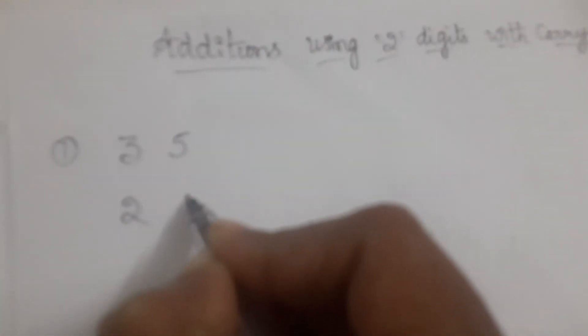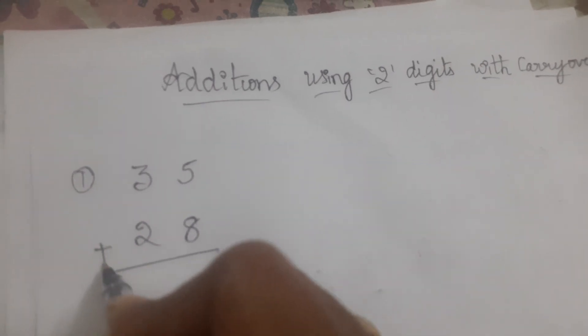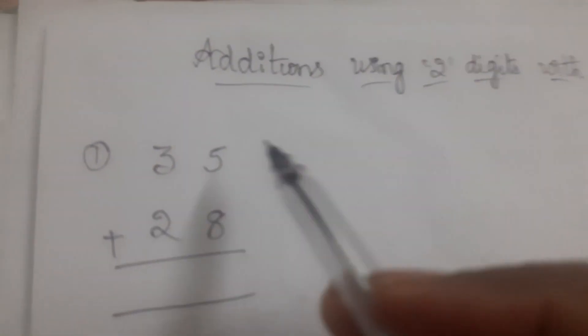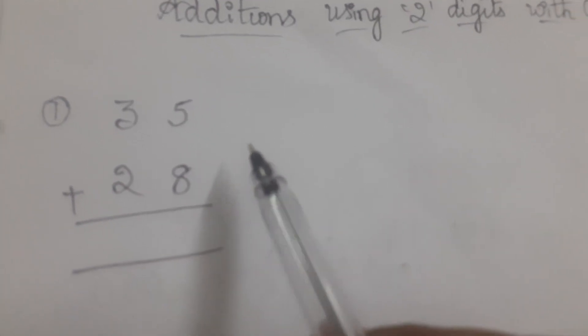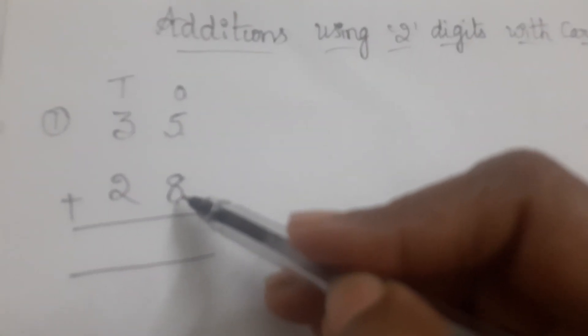First one: we have to add 35 with 28. Here the first number is 35 and the second number is 28. This is the ones column and this is the tens column. In the ones column, 5 and 8 are there in these two numbers. 8 is bigger than 5. The bigger number — always keep in mind.